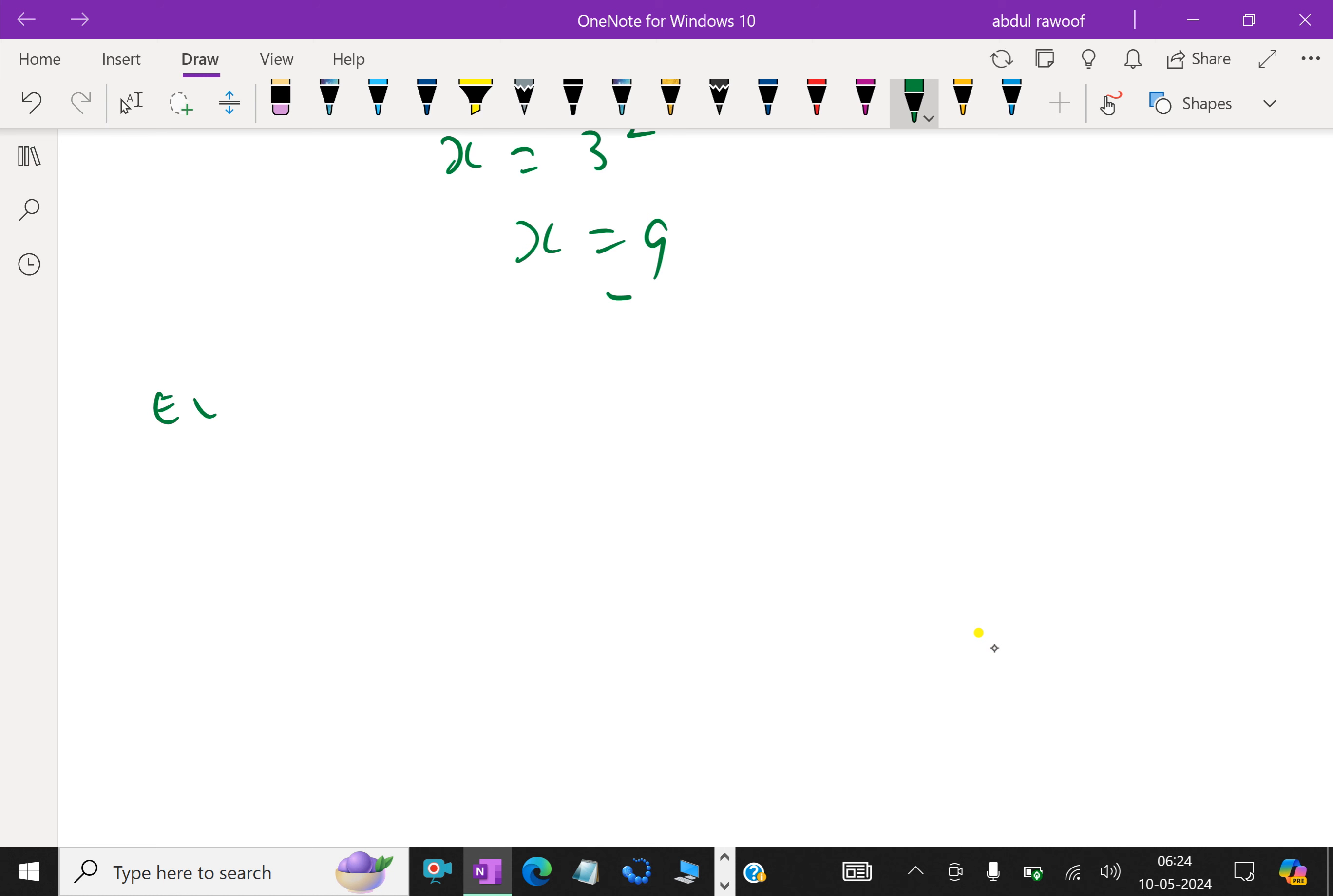For example, solve: log(x+2) minus log(x-2) equals log 5. Using the property log a minus log b equals log(a/b), this gives log of (x+2 over x-2) equals log 5. Removing the logarithms, (x+2)/(x-2) equals 5. Cross multiplying gives x plus 2 equals 5 times (x minus 2), so x plus 2 equals 5x minus 10.